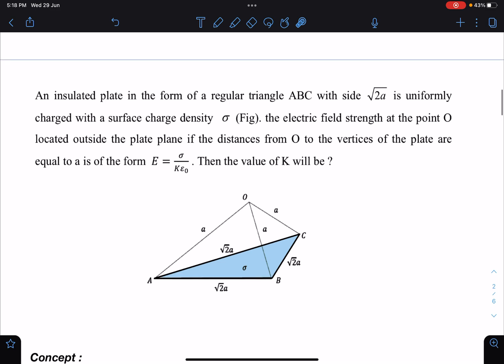Here is the problem statement: an insulated plate in the form of a regular triangle ABC with side √2a is uniformly charged with surface charge density σ. You can refer to this figure.